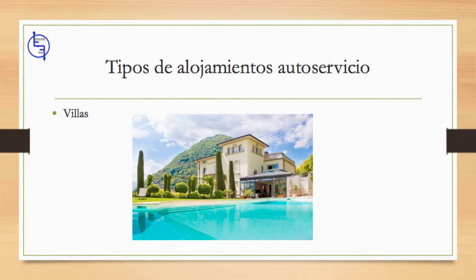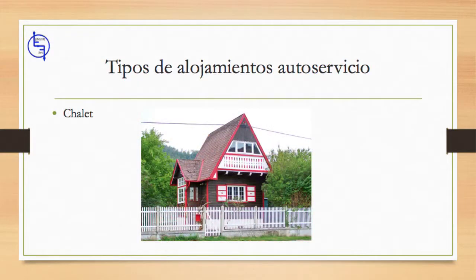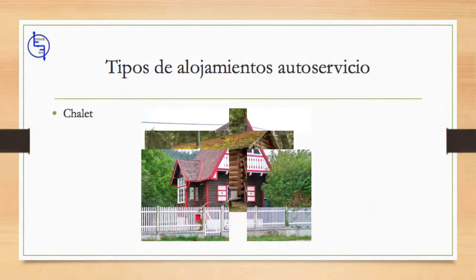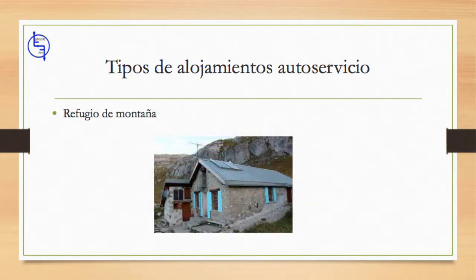Hoy en día, el término villa se aplica a menudo a las propiedades de alquiler de vacaciones. En el Reino Unido, el término se usa para viviendas unifamiliares de alta calidad en destinos cálidos. Un chalet es una pequeña casa en el campo, utilizada especialmente por personas de vacaciones o que participan en deportes. Una cabaña de troncos es una pequeña casa hecha de troncos de árboles. Un refugio de montaña es un edificio ubicado en lo alto de las montañas, generalmente accesible solo a pie, destinado a proporcionar comida y refugio a los montañeros, escaladores y excursionistas.